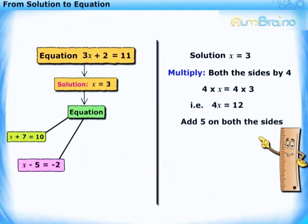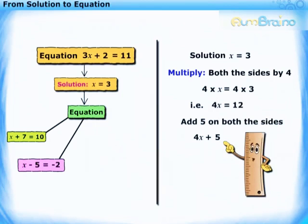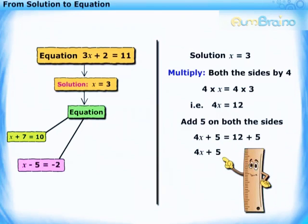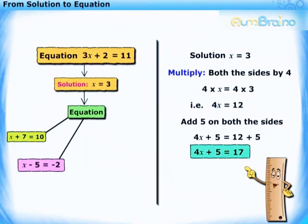Adding 5 on both the sides, we get 4x plus 5 is equal to 12 plus 5. Thus, we get the equation 4x plus 5 is equal to 17.